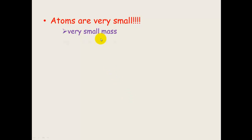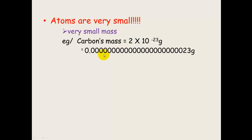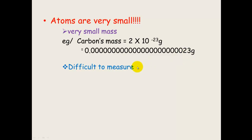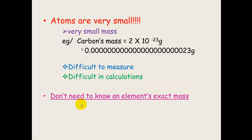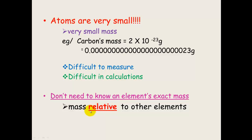Because atoms are small, they've got a really small mass. For example, carbon's mass for one atom is 2×10⁻²³ grams — that is incredibly small. This is difficult to measure and difficult to use in calculations. But we don't need to know an element's exact mass because we can work out that mass relative to other elements.